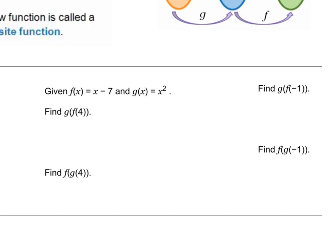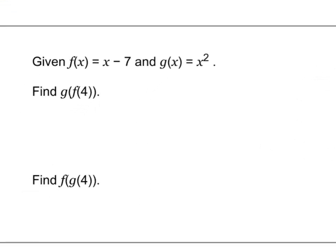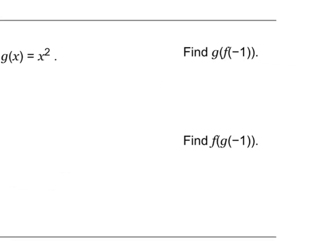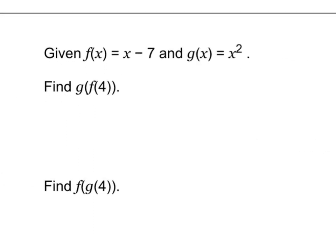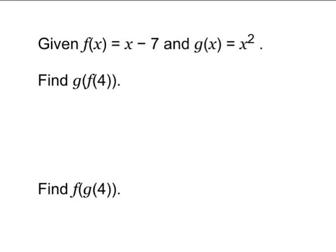You're given f(x) = x − 7 and g(x) = x². It's asking us to find g(f(4)), f(g(4)), g(f(−1)), and f(g(−1)). To find g(f(4)), I first evaluate f at x = 4: four minus seven gives f(4) = −3.